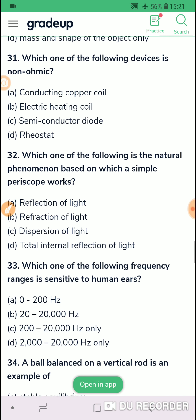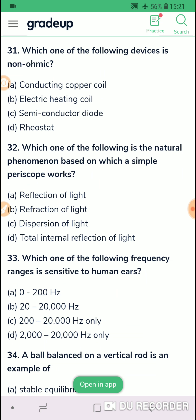Then question 31, which of the following device is non-ohmic? Non-ohmic means which does not exhibit Ohm's law. So semi-conductor devices mainly they do not obey Ohm's law. You do not have a potential difference versus current graph to be a straight line.